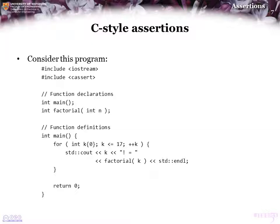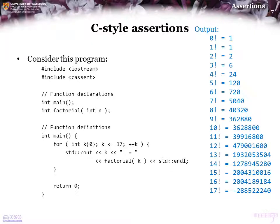All right, now let's consider the following program. This program is going to evaluate the factorial function for values of k between 0 and 17 inclusive. So let's take a look what happens if we compile this program and execute it. Here's the output.